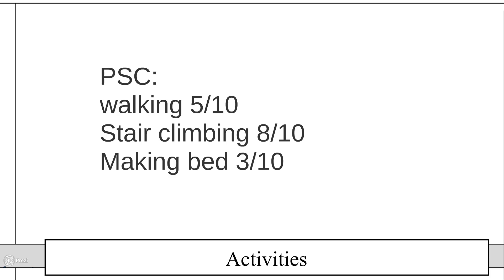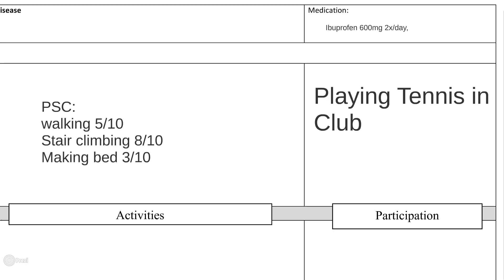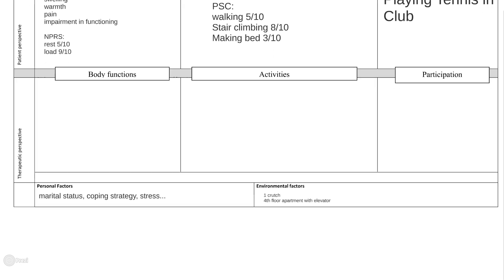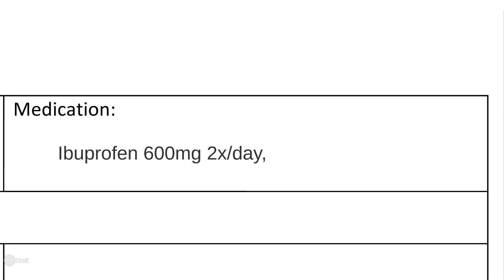When an activity has a social component, it belongs in the participation box. Keep in mind that all subjective information you obtain from your patient belongs in the upper half of the RPS form; you will mainly fill in the lower half during your objective assessment when you test the patient's functioning. Don't forget to ask the patient about medication, as it could give you hints on possible comorbidities that might affect your treatment process.